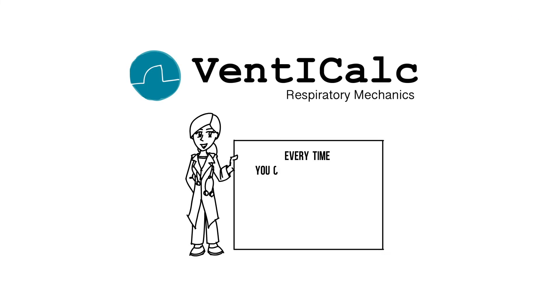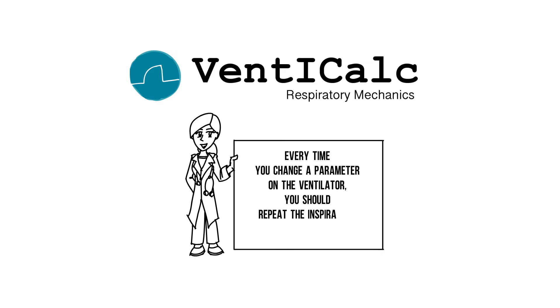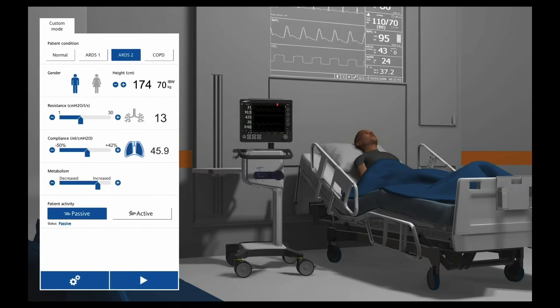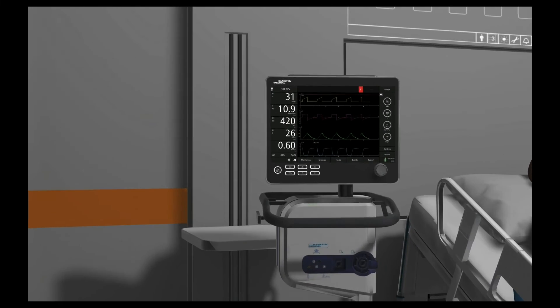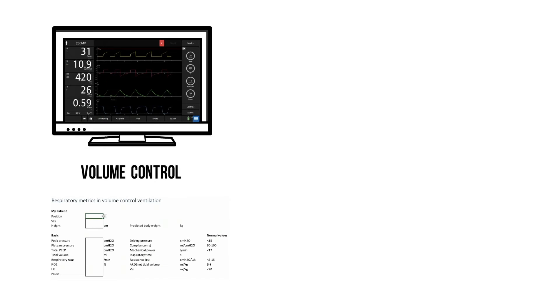Please remember that every time you change a parameter on the ventilator, you should repeat the inspiratory and expiratory hold. Check your own ventilator on how to perform and record these holds. This patient is ventilated using a volume-controlled mode. Start out by filling out the position — meaning either prone or supine — the sex and the height of your patient. Then enter all of the settings of the ventilator.